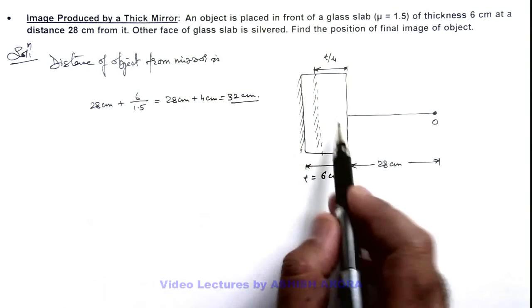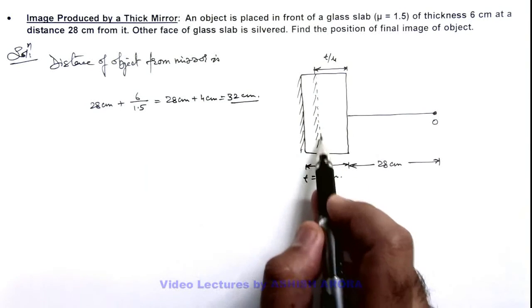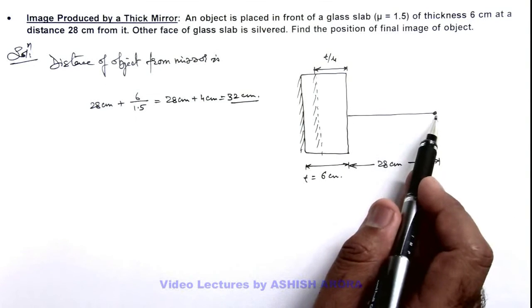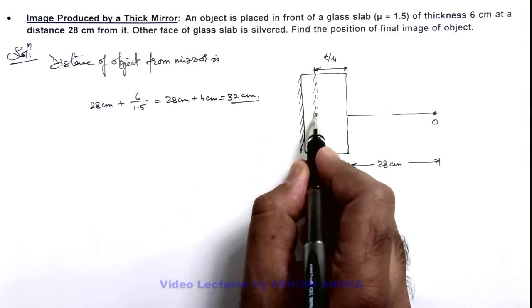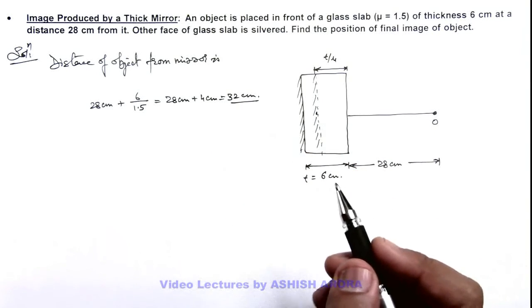So this is the distance in front of the apparent position of the mirror the object is placed. So the image will be produced exactly at this distance behind the apparent position of this mirror.